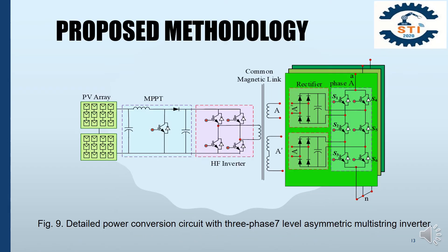Figure 9 shows the proposed high-frequency magnetic linkage multi-string inverter circuit. Firstly, the DC power of the PV array is boosted up to the required voltage level through the boost converter. The output of the boost converter is converted into medium-frequency AC voltage using a medium-frequency AC inverter circuit. Then the output of this inverter is connected to the primary of the common magnetic links, and the secondary of the magnetic links are connected to the inverter circuit through the rectifier circuit.